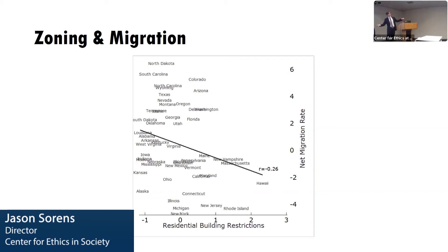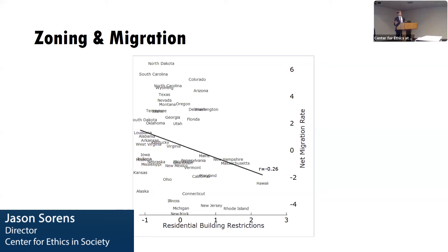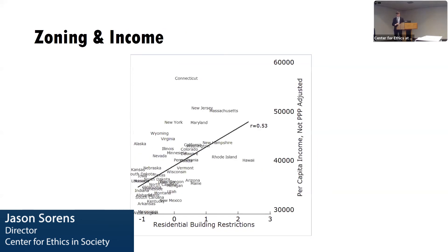A history of migration positively affects regulation, and then regulation in turn negatively affects migration. So the true causal effect is quite a bit steeper here. If you want to drive people away from your state, residential building regulations are a good way to do that.